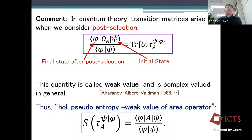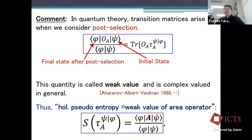In quantum theory, transition matrices arise naturally when we consider post-selection: we start with initial state |psi>, eventually project to |bar phi>, and insert a Hermitian operator in the middle. Such quantities are called weak values, and the real and imaginary parts can be measured experimentally. In our case, the observable O_A is the modular Hamiltonian — log of tau_A. Holographic pseudo-entropy can therefore be rewritten as the weak value of the area operator: S_pseudo = < bar phi | (Area operator) | psi > / < bar phi | psi >.